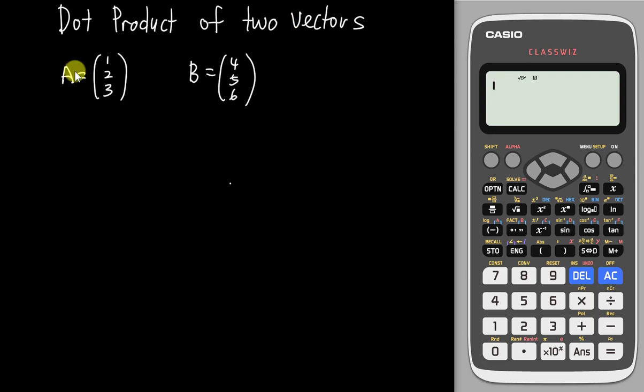Let's say today I have vector A, which is (1, 2, 3), and vector B, which is (4, 5, 6). This one we call a three-dimension vector.